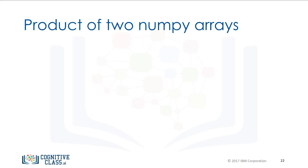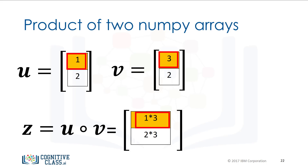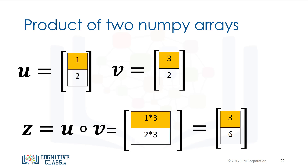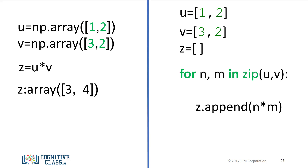Hadamard product is another widely used operation in data science. Consider the two vectors u and v. The Hadamard product of u and v is a new vector z, where the first component of z is the product of the first elements of u and v, and the second component is the product of the second elements. The resultant vector consists of the entry-wise product of u and v. We can perform the Hadamard product with one line of code in NumPy.